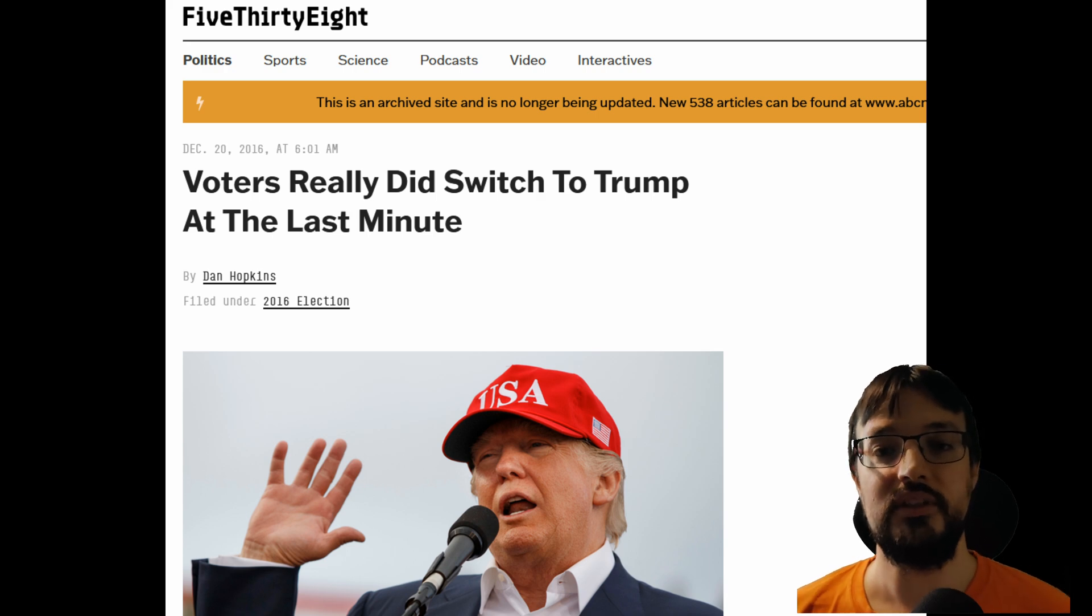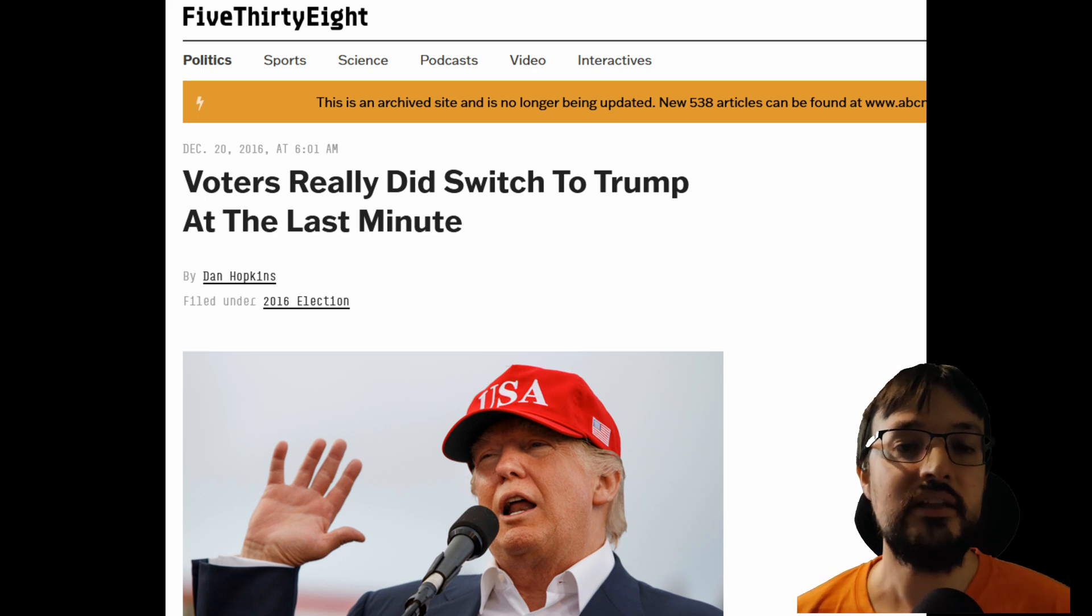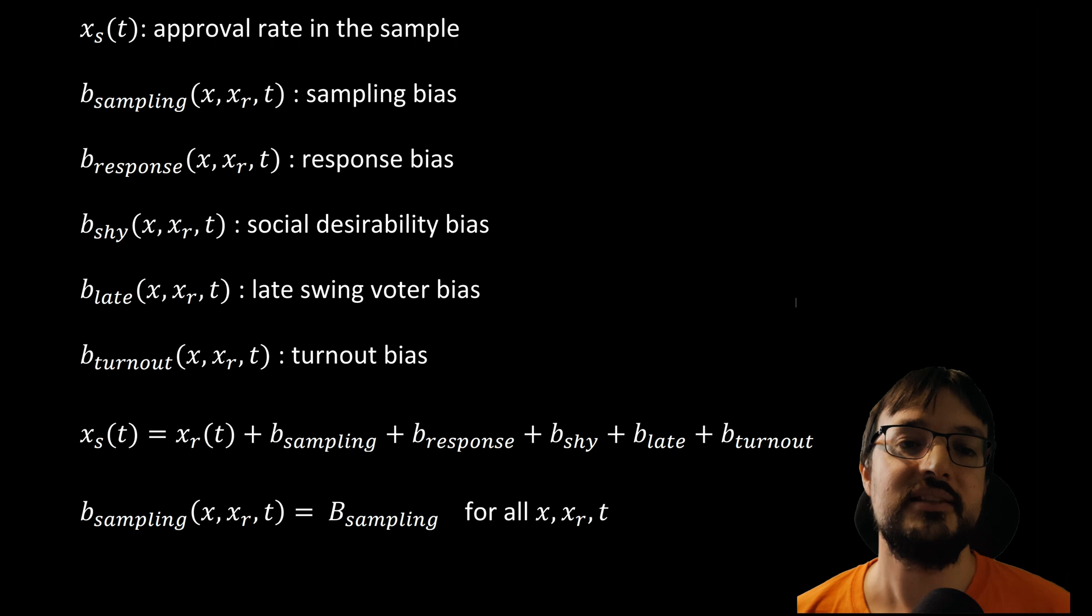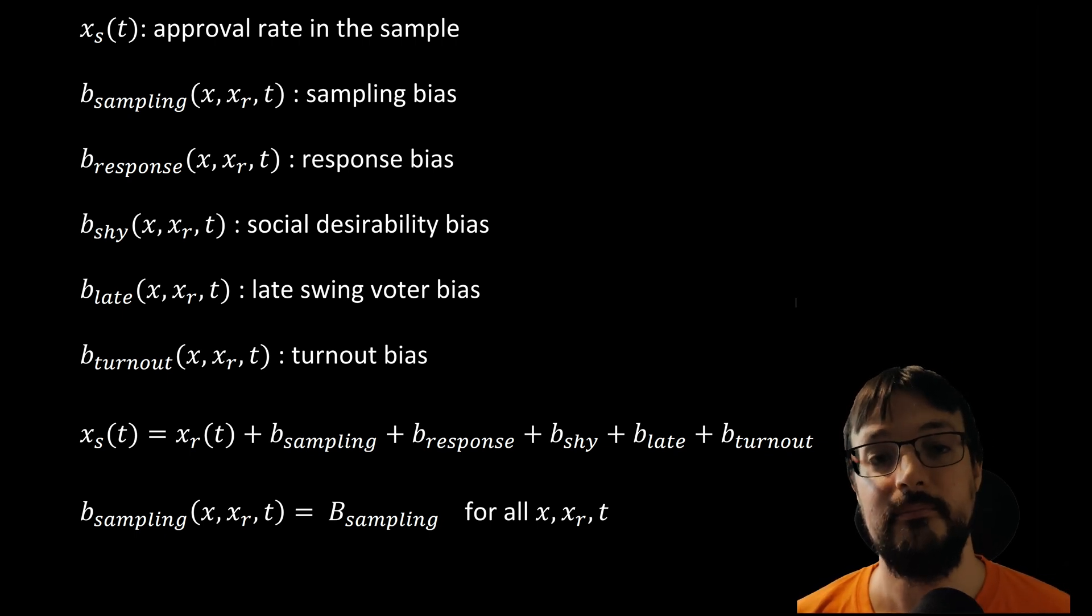Then there is last minute swing voters. Many voters didn't make up their minds until the final days, and a large number of them in 2016 broke for Trump. Polling data didn't capture these last minute shifts, which are usually indicated as undecided in the opinion poll results. This leads to discrepancies between the polling predictions and the election results. We indicate last minute swing voters bias with a function called b_late(x, x_r, t).